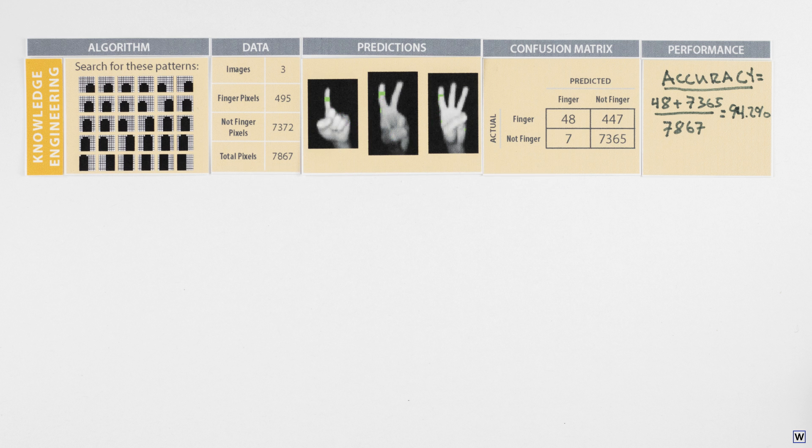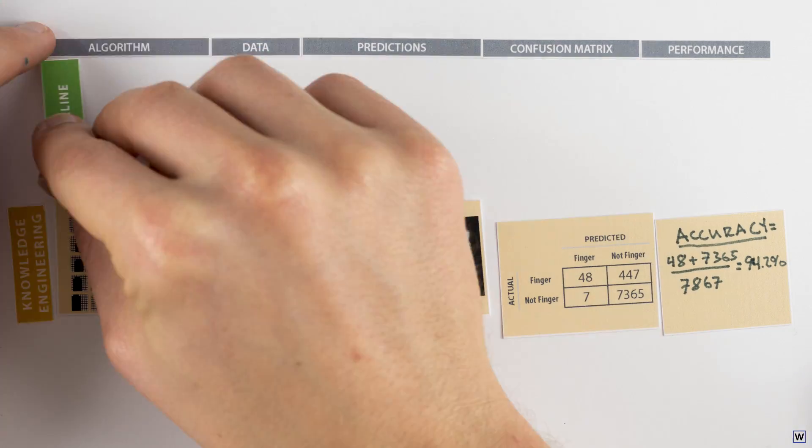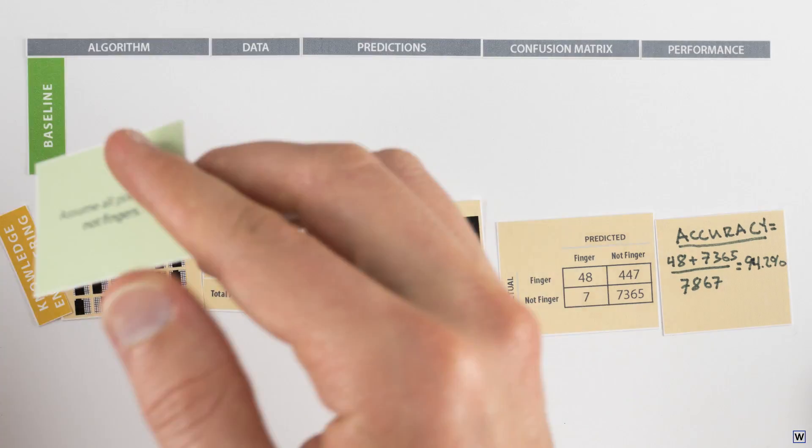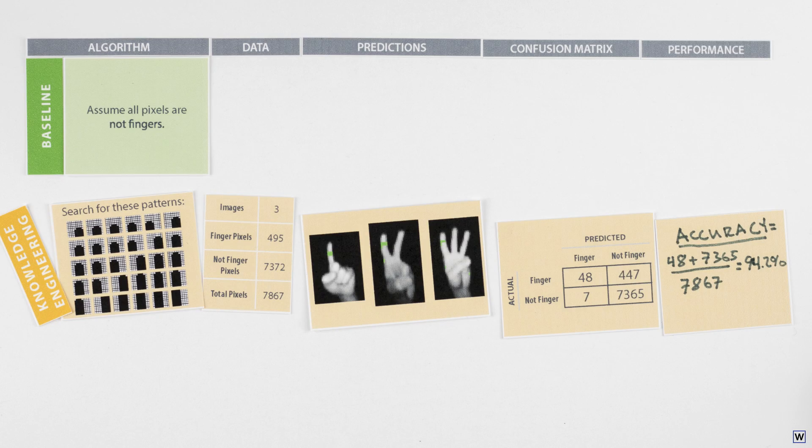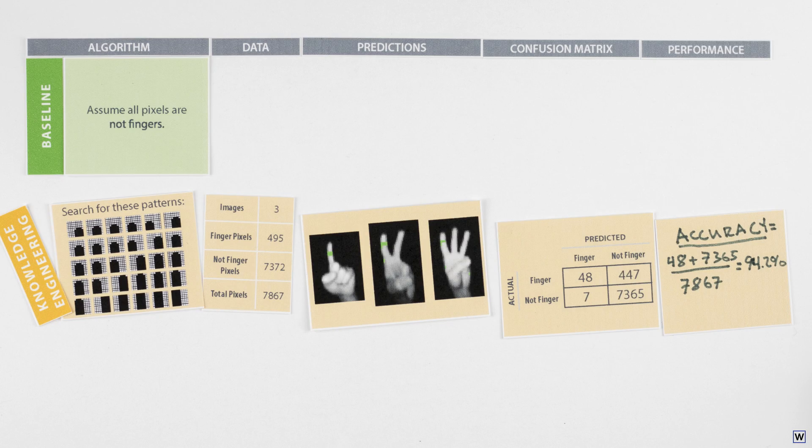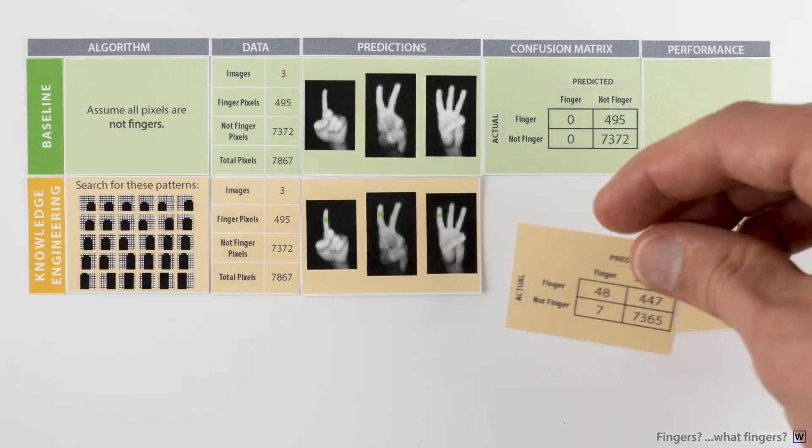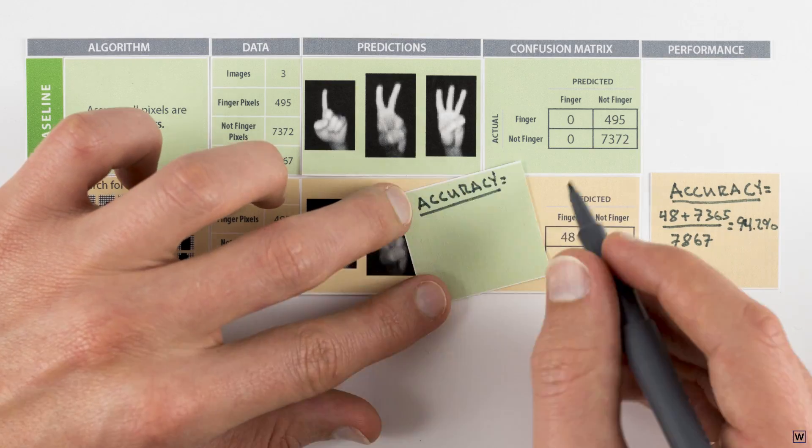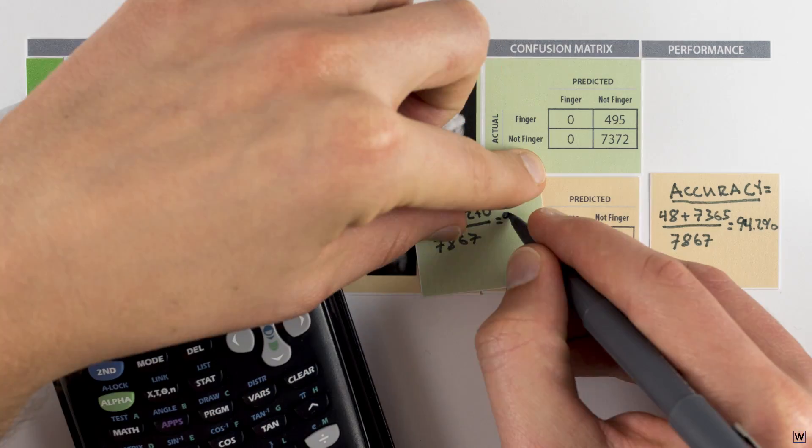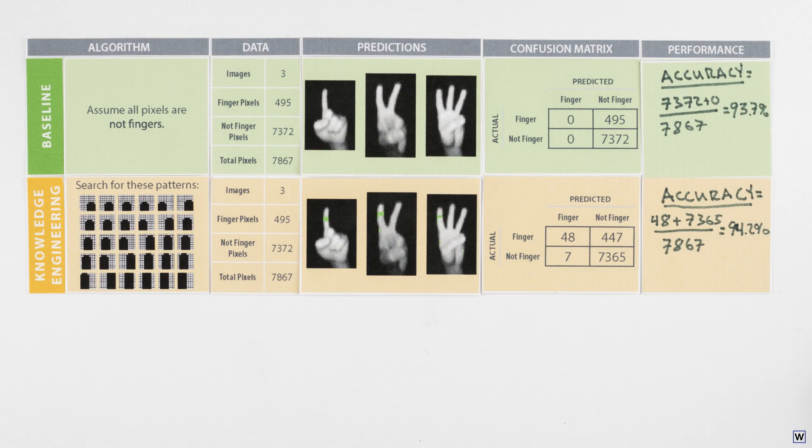So how does such a crappy classifier achieve such a high accuracy? It's all about baselines. Notice that 93.7% of our pixels don't correspond to fingers. We can exploit this imbalance in our data by constructing the world's simplest classification algorithm. All examples are negative. By simply classifying all pixels as not fingers, we of course miss all the fingers. But who cares? They only account for 6.3% of the data. We're 93.7% accurate.